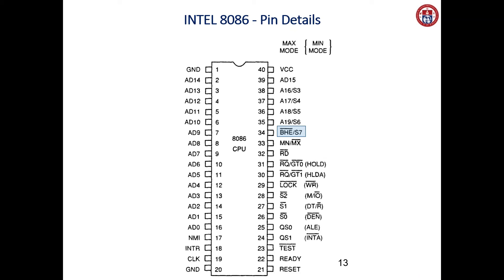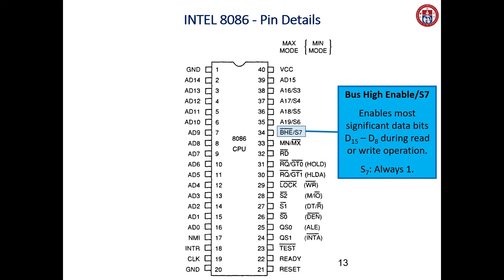Following the status bits, we have the Bus High Enable (BHE) signal. When this signal is active, it enables the most significant data bits D8 to D15 during read or write operations. The 8086 has 16 data bits D0 to D15, and the BHE signal specifically enables the upper byte D8 to D15.